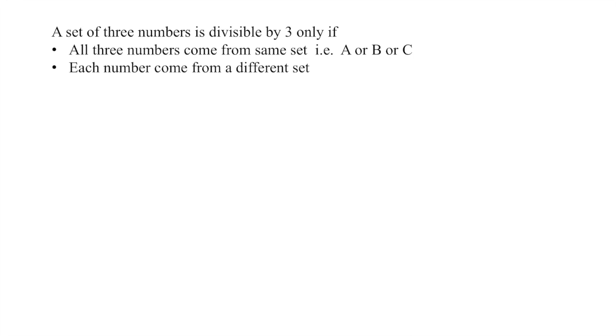If all 3 numbers come from set A, uske number kitne hoongay? Total number hoongay 10C3. Agar numbers set B or set C se aaye, woh 11C3 se aaye sakte hai, total number of numbers 11 hai. 11C3 into 2. Thik hai?